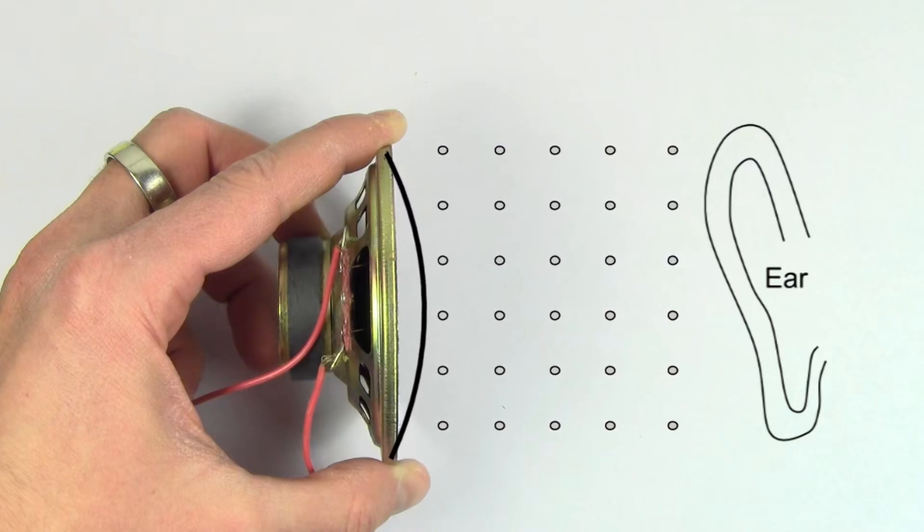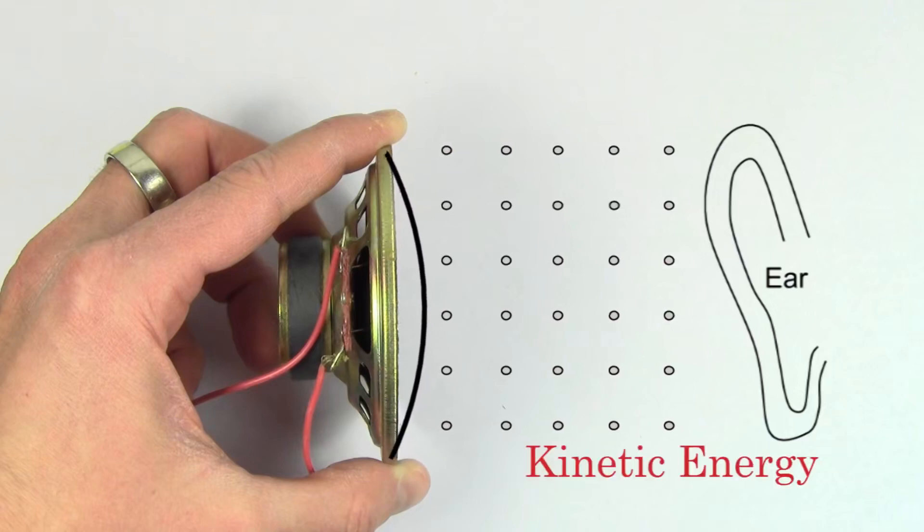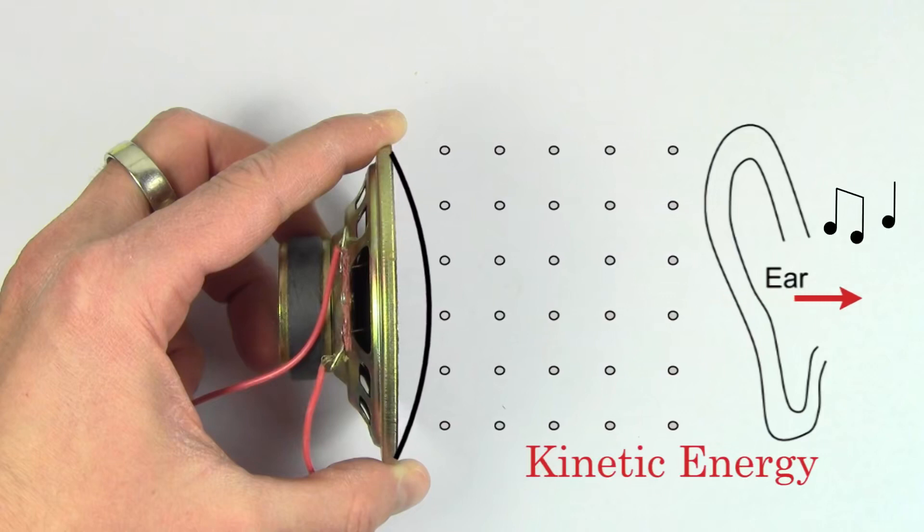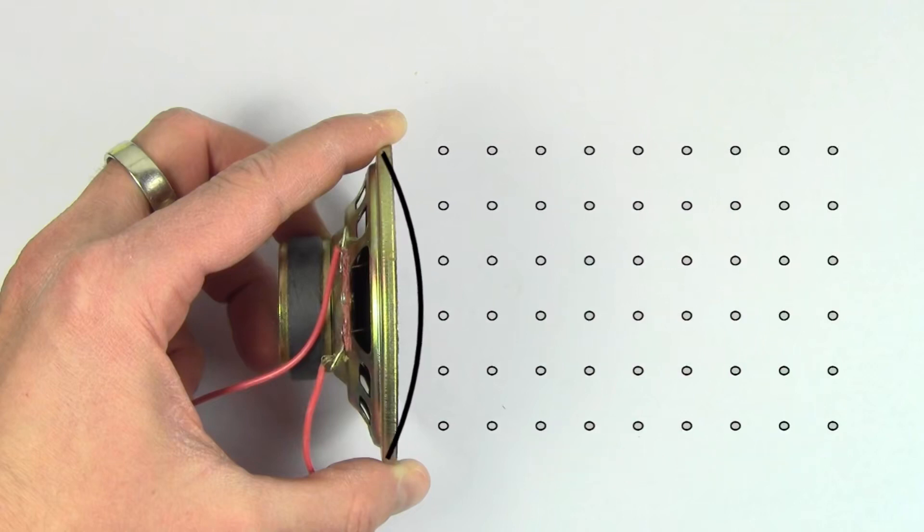This oscillating air that's next to your ear is moving, so it has kinetic energy. So it can transfer energy into your eardrum, which you can perceive as sound. So this speaker was able to transport energy through the air without actually having to transport the air itself.